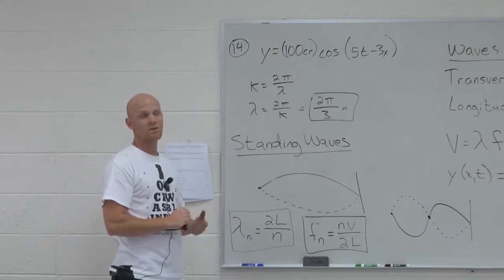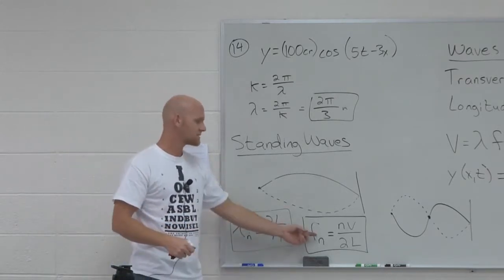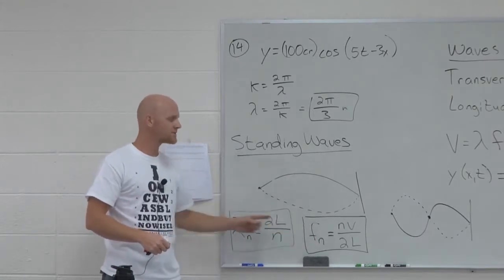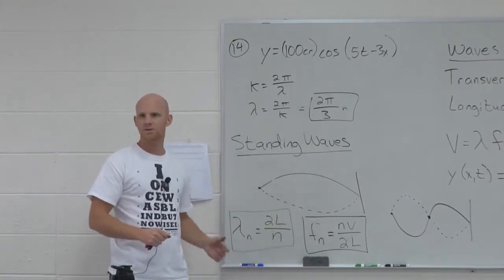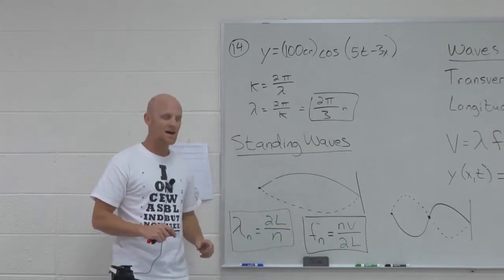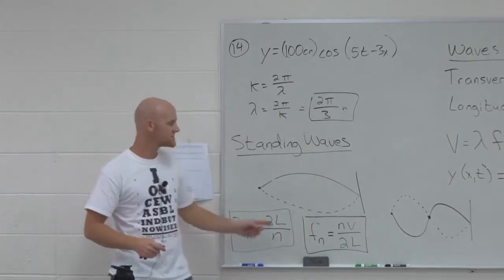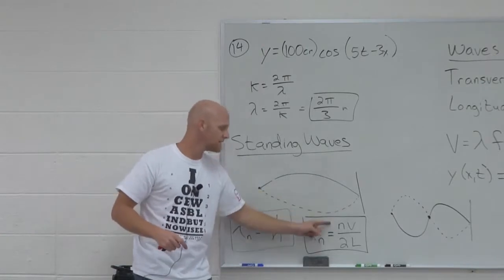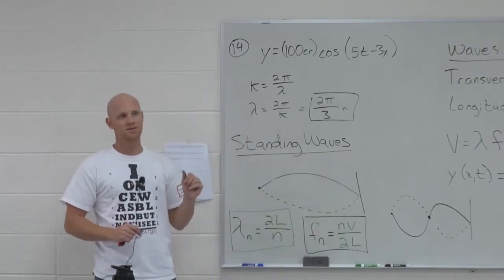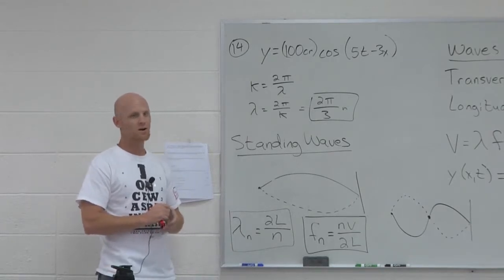If they say find the first harmonic, you plug in N equals 1. Whether they're asking for the fundamental frequency or the fundamental wavelength for that first harmonic, if it just says first harmonic, we're usually looking for frequencies. I gave you the simpler of the two equations, knowing you could then take velocity divided by that to get the frequency — the fewer equations you have to memorize, the better.